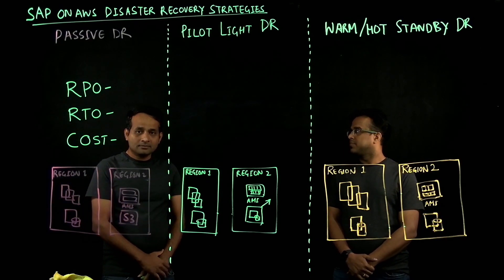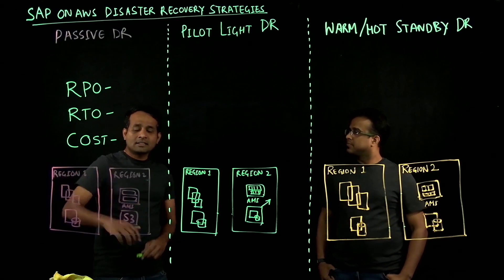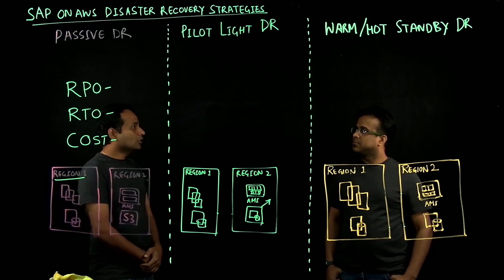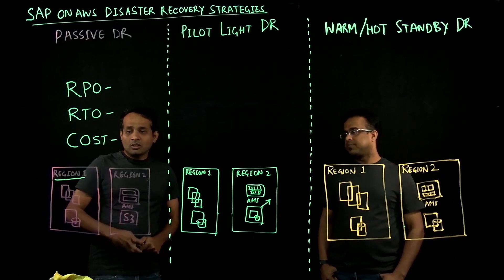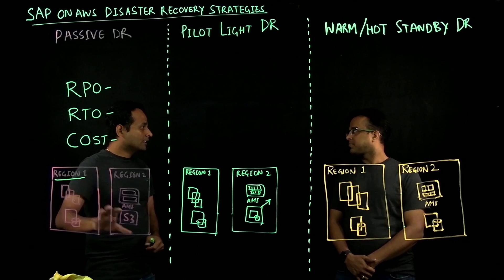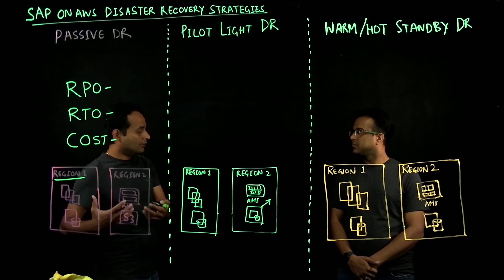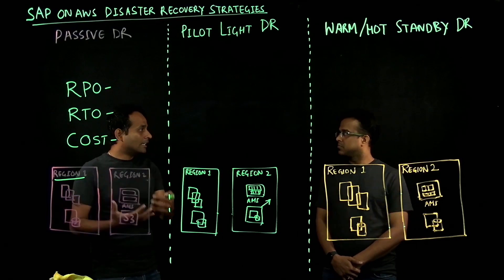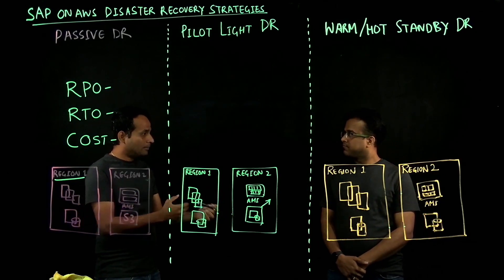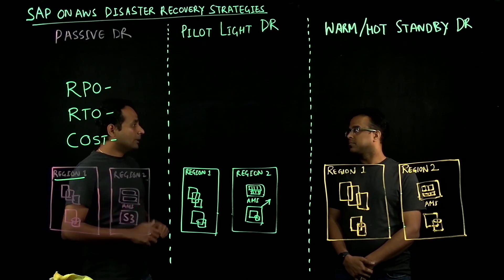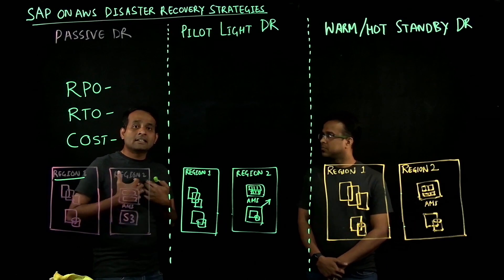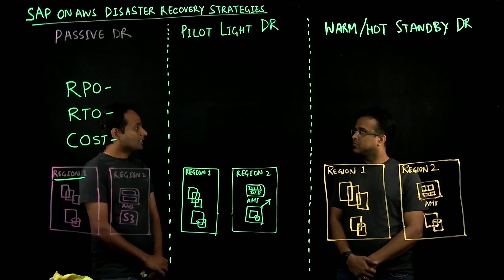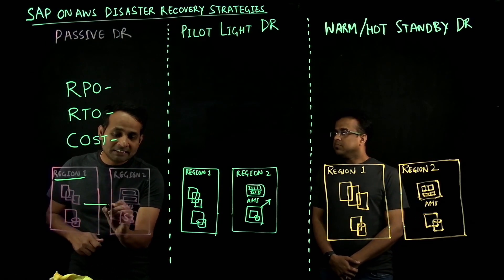With that, I want to start with passive DR. Passive DR is a pattern where your systems are running in Region 1 and your disaster recovery strategy is going to rely on the backup restore methodology. All the systems running in your first region — whether it is Amazon EC2 instances or databases — you back them up using database native tools or any custom tools you are using for your backup strategy, and you send all those backups to an Amazon S3 bucket.